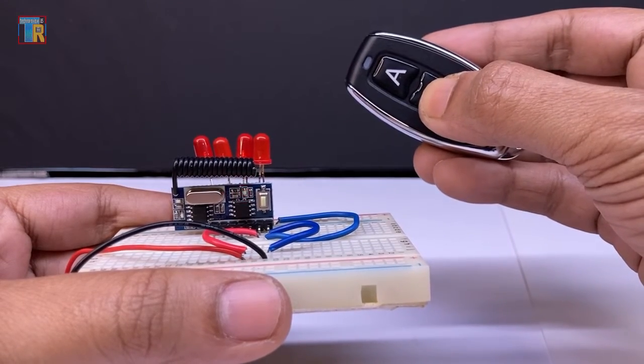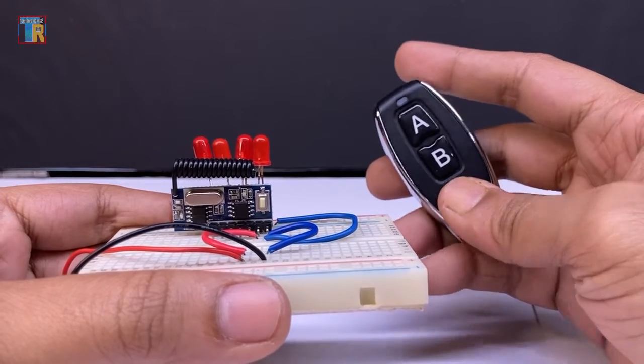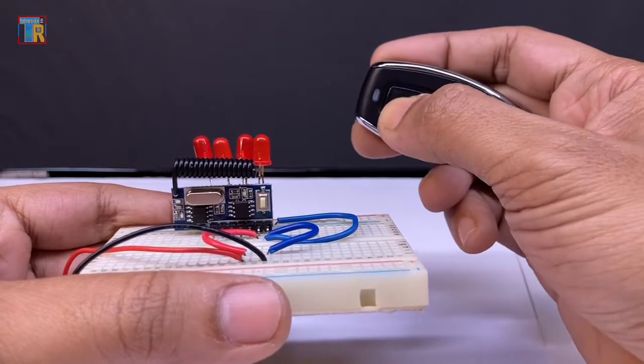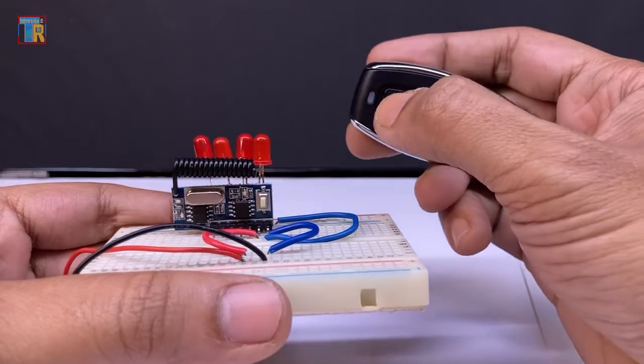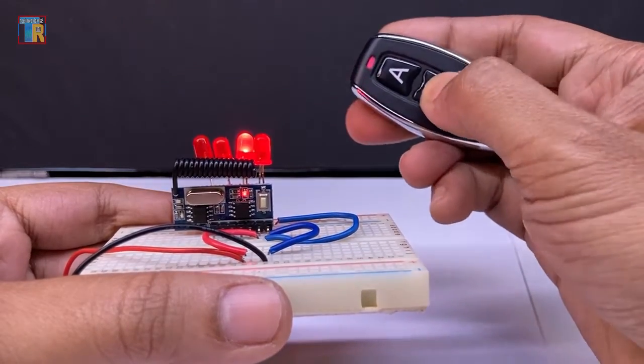Now you can see when I am pressing A, the LED is glowing, and when pressing B another LED is glowing.